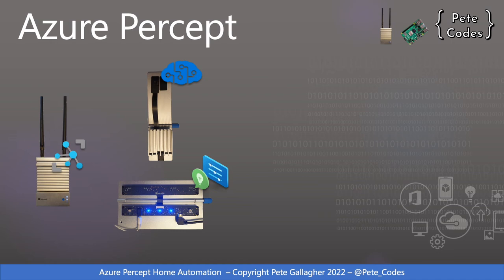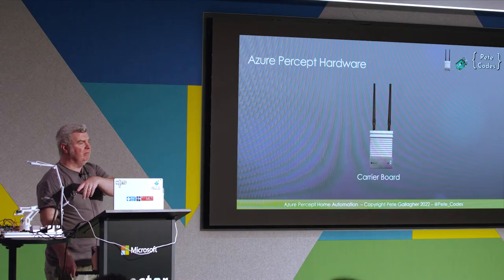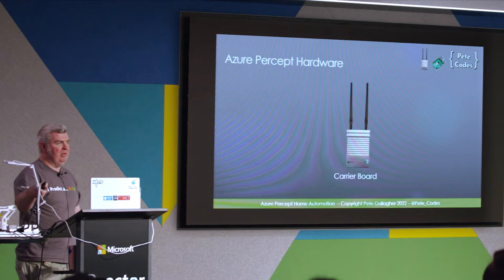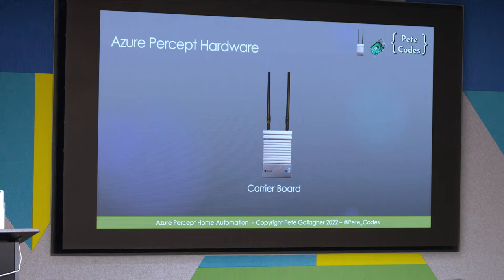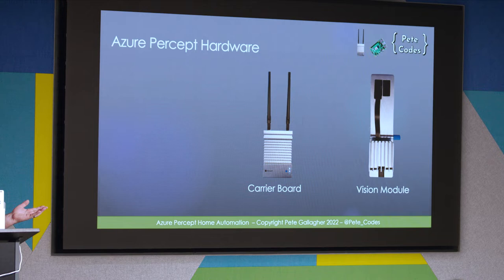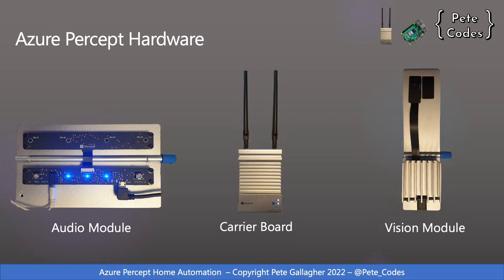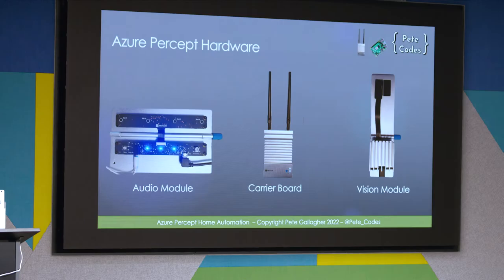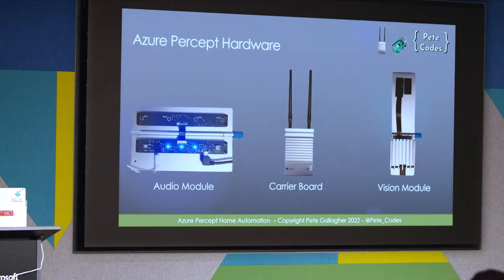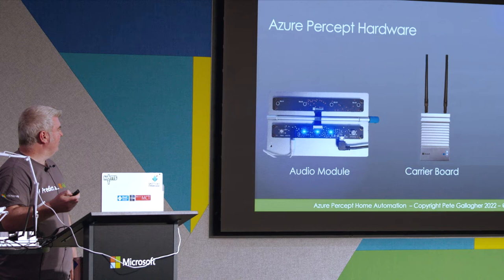This is all about the Azure Percept. As far as hardware is concerned, it's made up of a carrier board, which is like the brains of the device — a single board computer, a bit like a Raspberry Pi or more like an NVIDIA Jetson. I've also got a vision module, which does custom vision, as well as an audio module, which is actually what I'm going to be speaking about today. We don't get many talks about the audio module when you see the Percept stuff, so I quite like this — something a bit different.